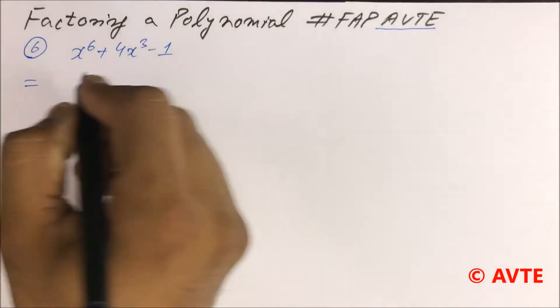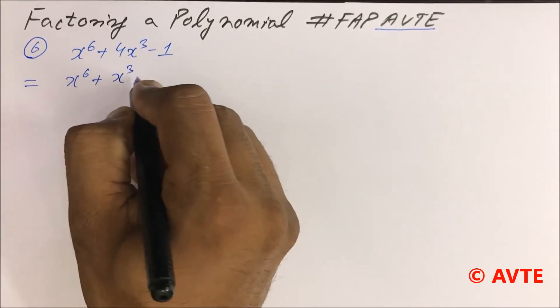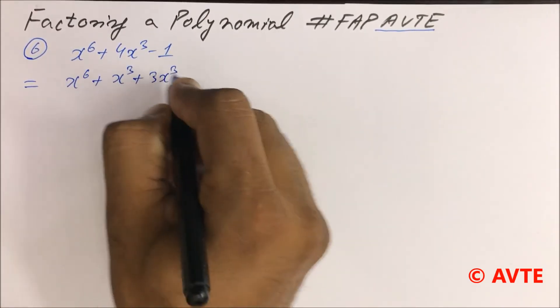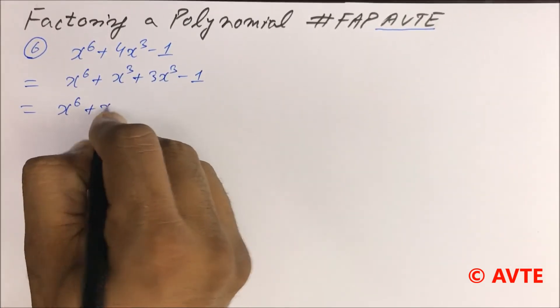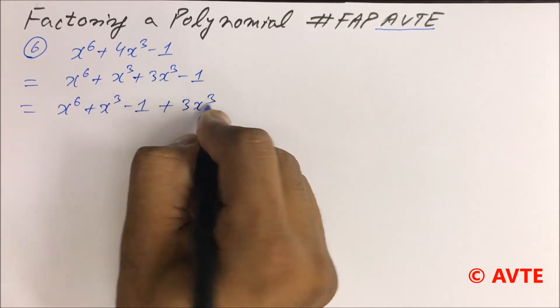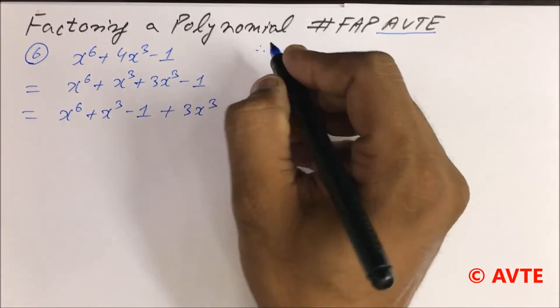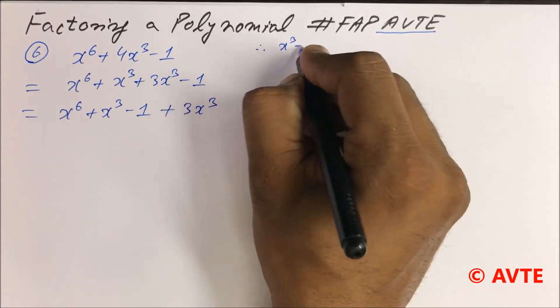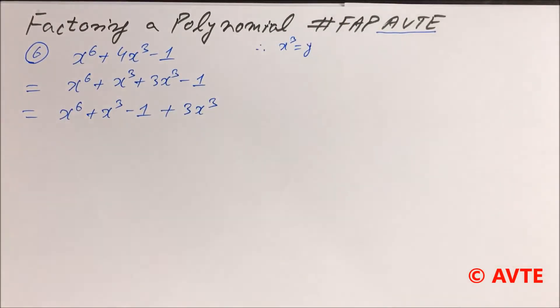You can split this 4x cube into x cube plus 3x cube minus 1, and now you arrange like this. If you apply x cube as y, I told you this thing in the previous video, I think question number 3.